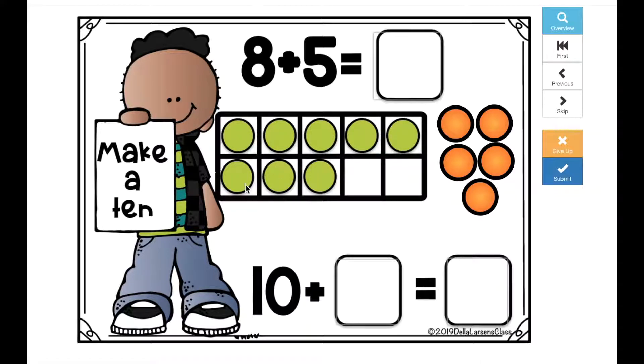If you look here at the 10 frame, you can see there are 8 dots: 1, 2, 3, 4, 5, 6, 7, 8.